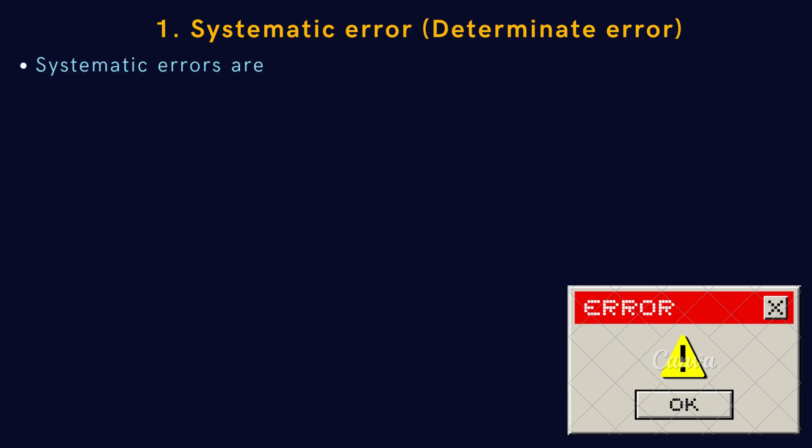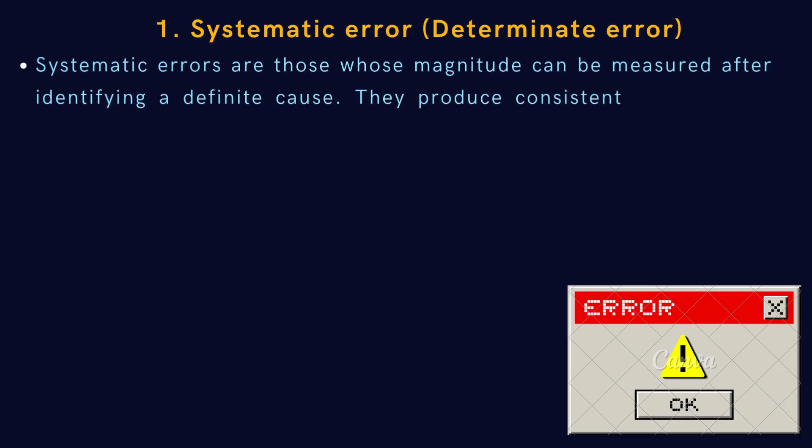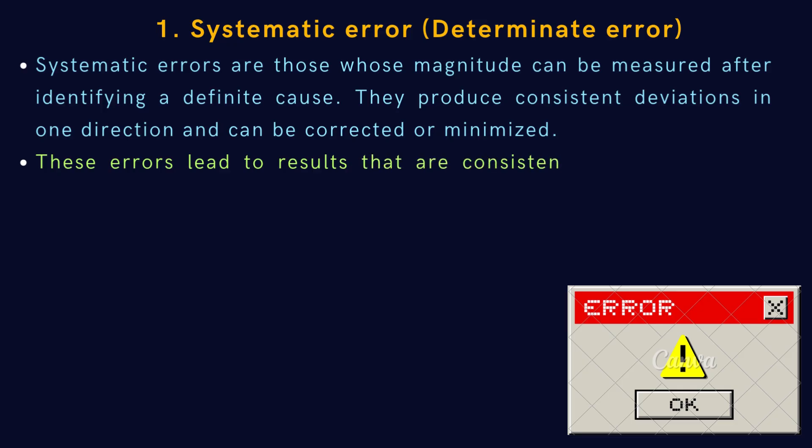Let's understand the concept of systematic or determinate errors in chemical analysis. Systematic errors are those whose magnitude can be measured once the definite cause is identified. They produce consistent deviations in one direction, either higher or lower than the true value.